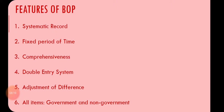Another important feature is the double entry system — meaning we do not only look at income or receipts, but alongside that we also look at payments. So both how much payment we are making and how much receipts we are receiving are examined. That is why we say it has a double entry system. Furthermore, there is adjustment of differences — if a difference is found between the receipts received and the payments made, how that difference can be adjusted is also an important feature. Additionally, all items are included — whether government or non-government. Both government payments and receipts and those of the private sector and semi-government sector are included.